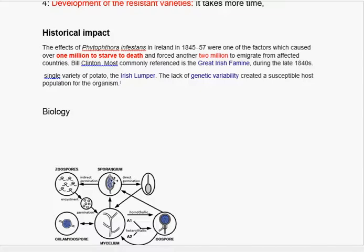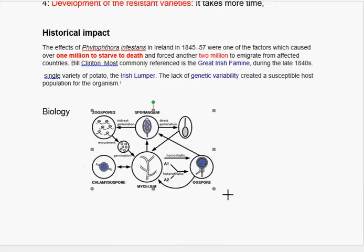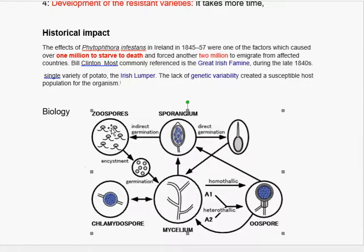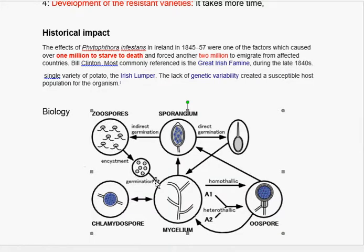Now, how do we understand the biology of this fungus? As I have already told you, this is the mycelium of the fungus. It has two pathways: it can produce sporangia. If it produces sporangia, then this sporangia can directly germinate into hyphae and then hyphae grow into mycelium. The sporangia also have small spores inside called zoospores. When the zoospores are released, they germinate and again form mycelium.